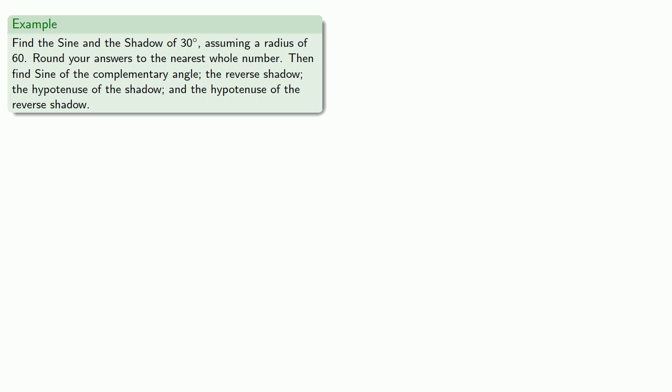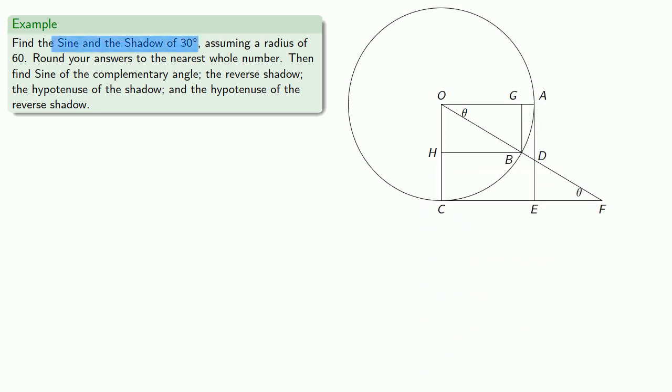Let's draw a picture. These come from the shadows of vertical or horizontal gnomons, so we can make both of those the radii of a circle. We have a central angle of 30 degrees, and the radius is 60. So this length OB is equal to 60. That means this triangle OGB is a 30-60-90 right triangle, and so we know that GB is equal to 30, the SINE.